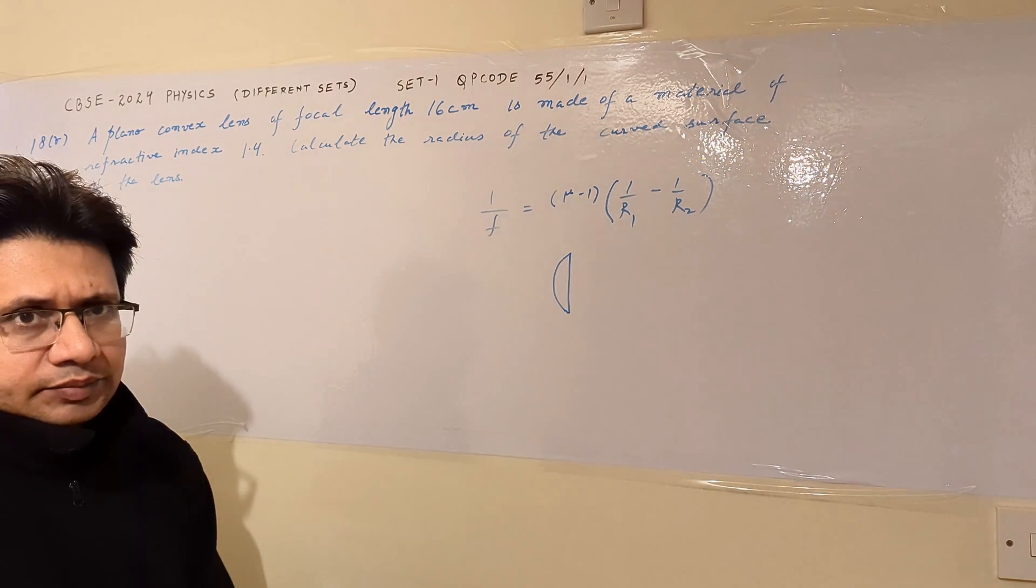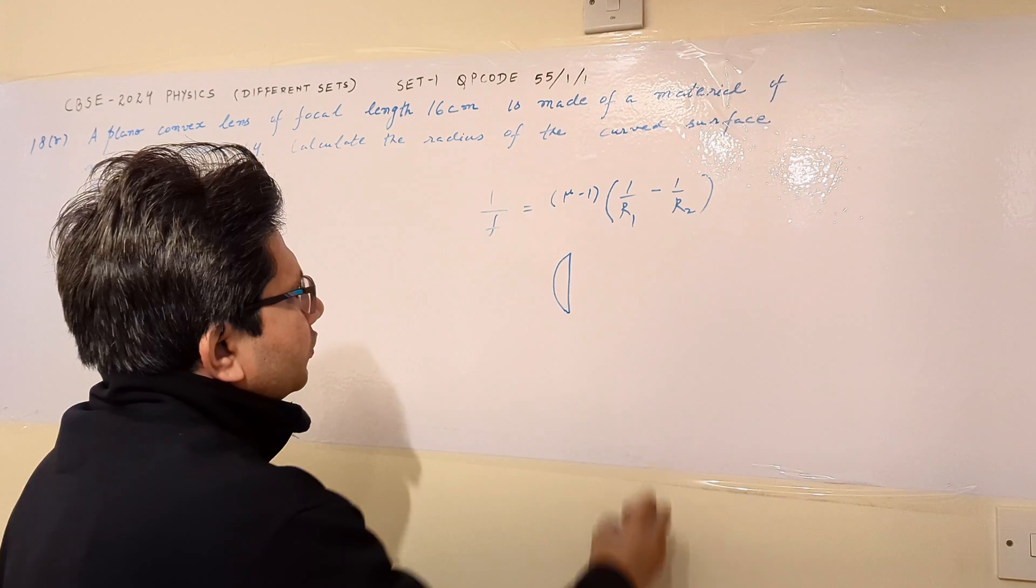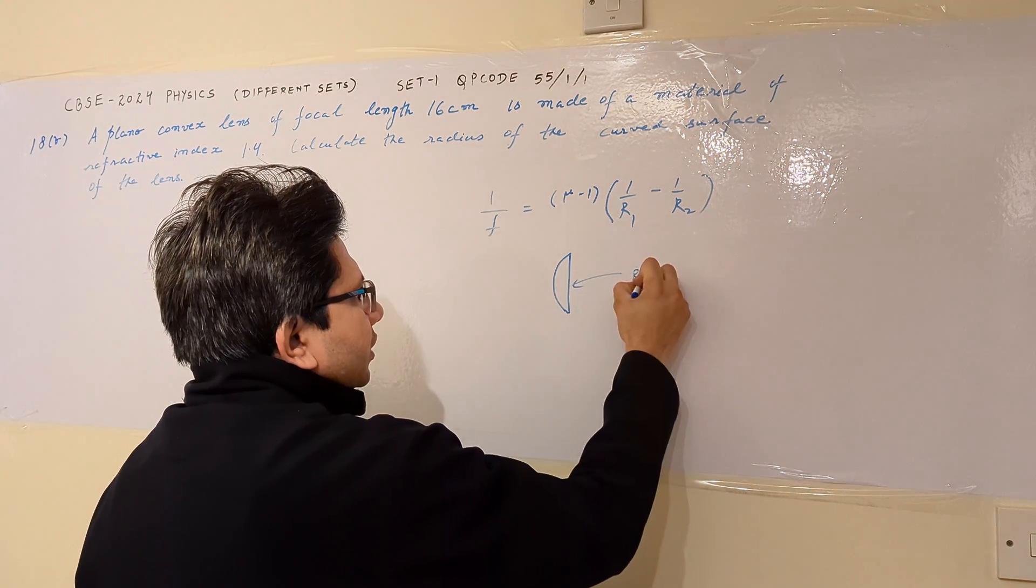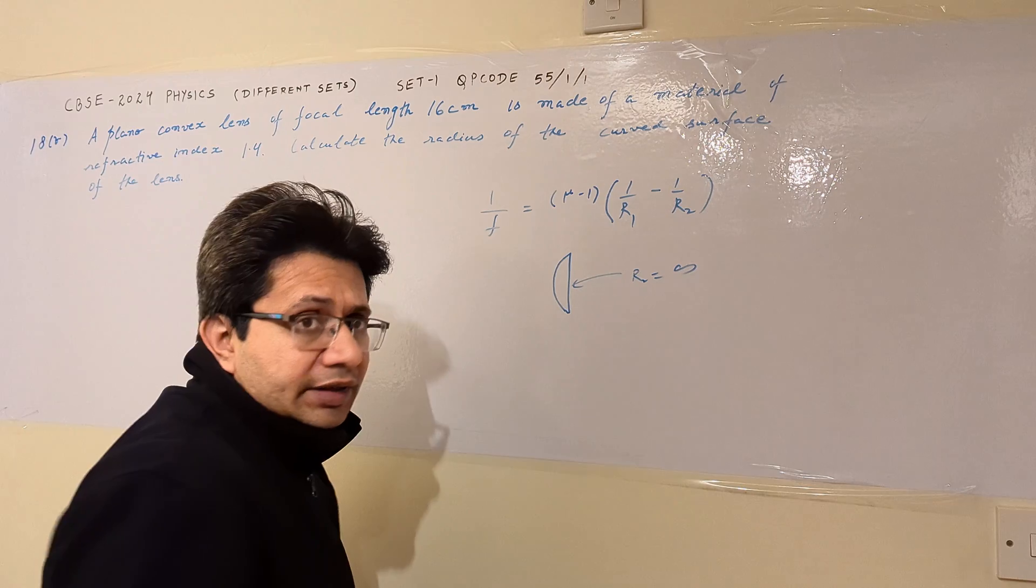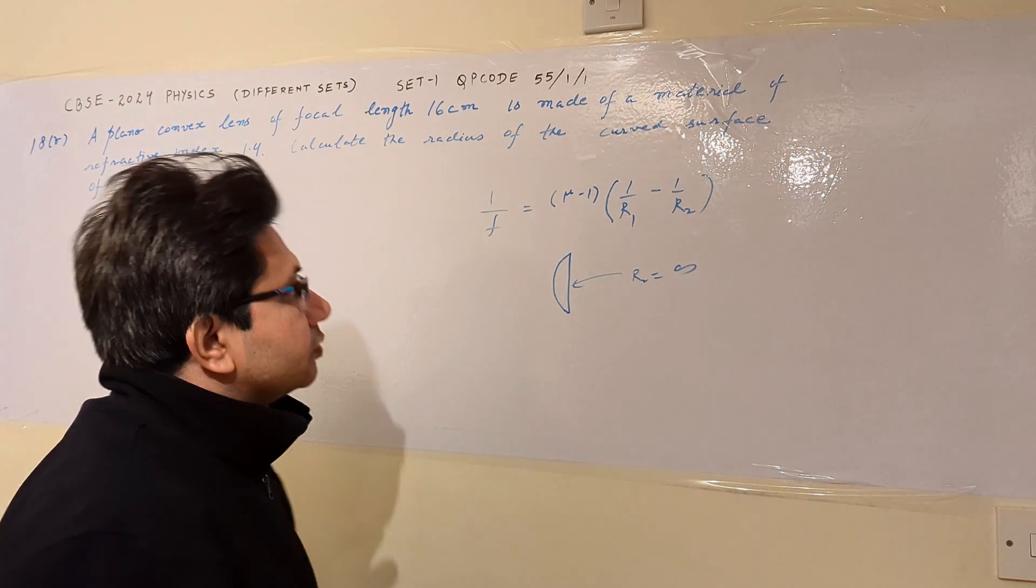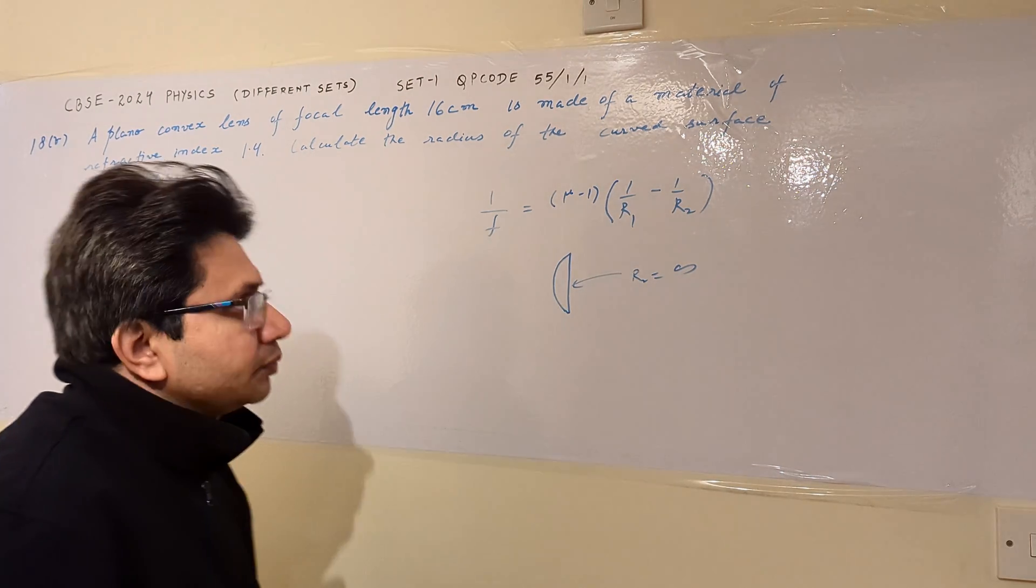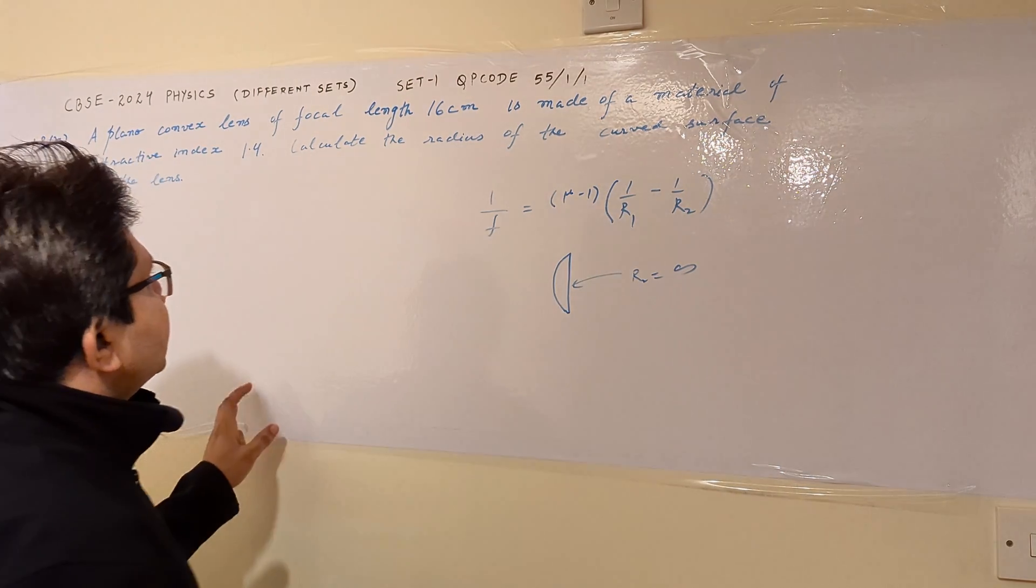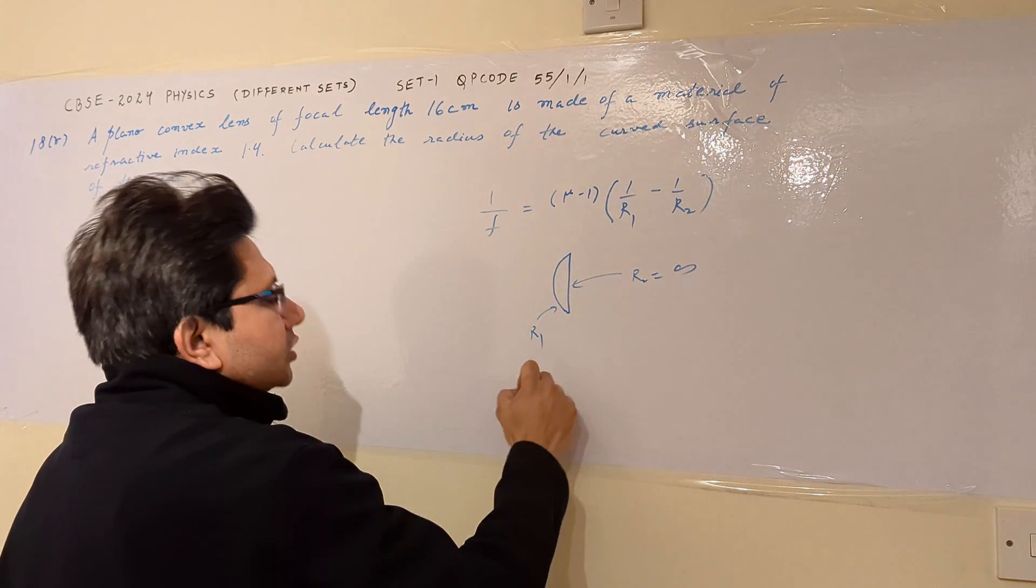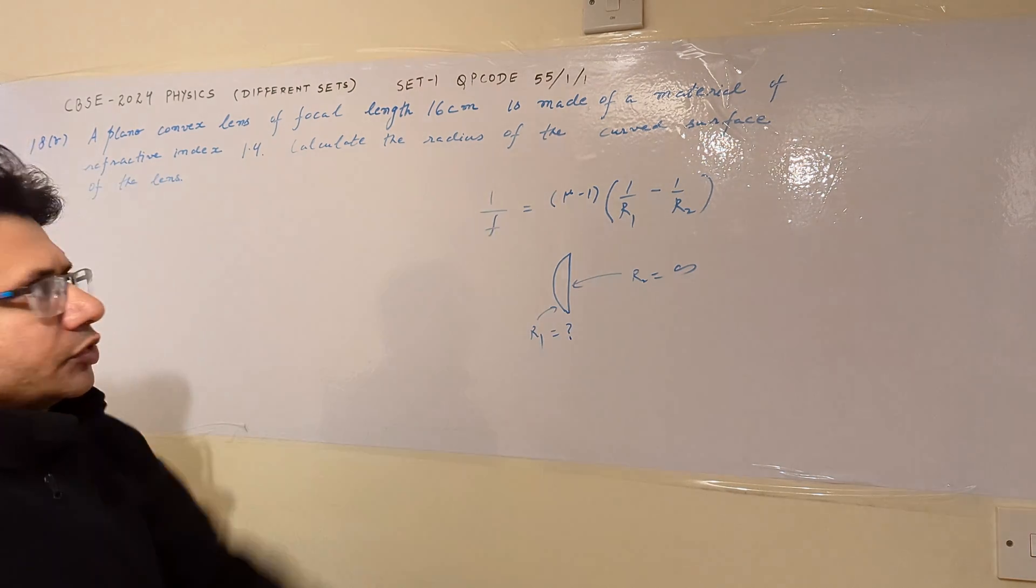We have to take the radius for the plane side, which is r2, as infinite, because this is part of a circle having infinite radius. r1 is the radius of the curved surface, which is unknown and required in this particular problem.